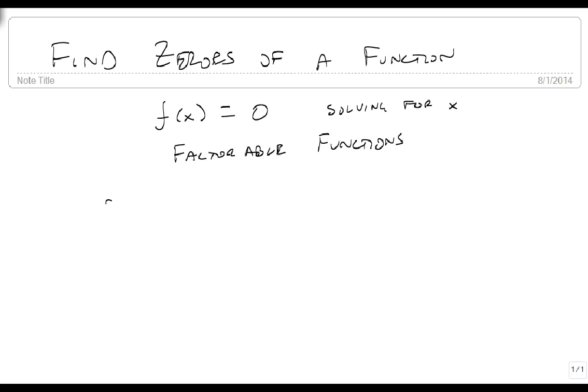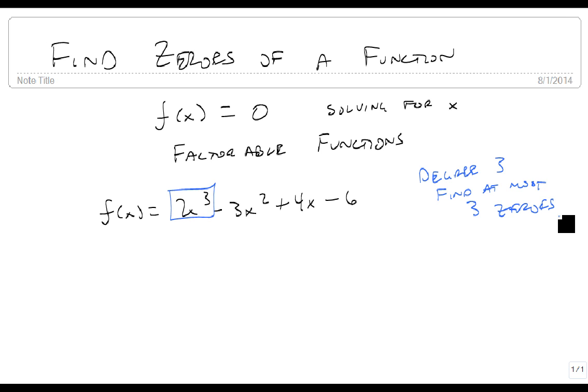For our first example, we're going to start with f(x) equals 2x cubed minus 3x squared plus 4x minus 6. Our lead term is important here, but the big thing is with the degree 3, this means we can find at most three zeros. There are three zeros out there. They may be repeats, they may not be real, but there are three zeros out there that we would like to try and find.